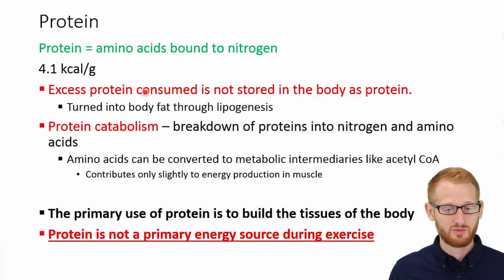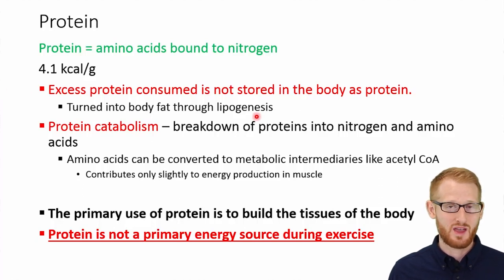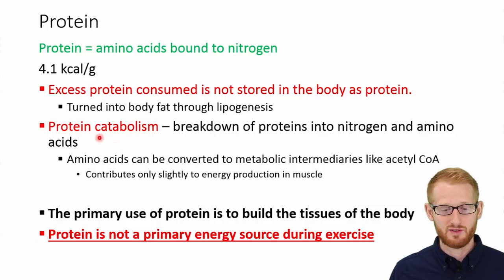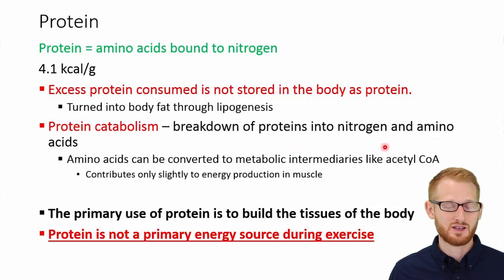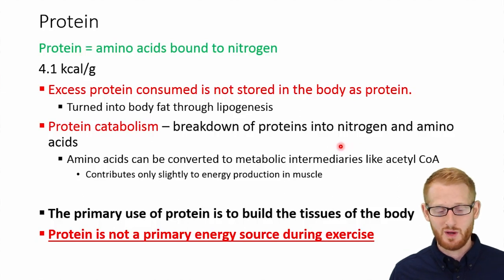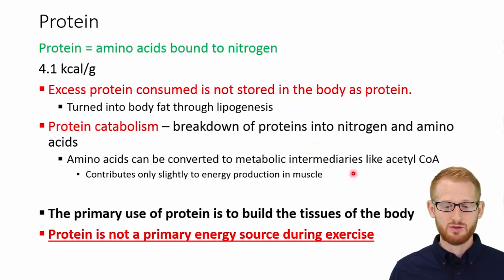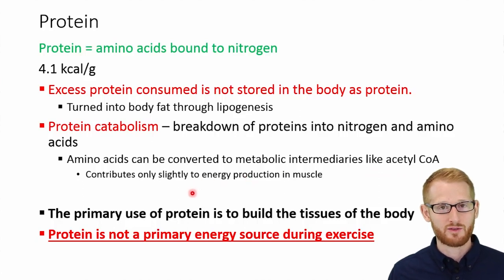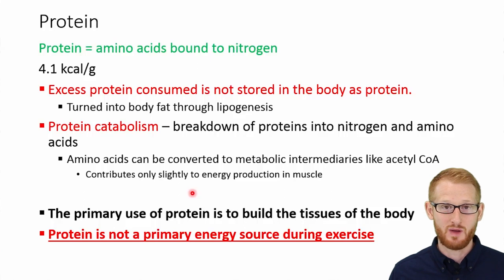If we consume too much protein, just like carbohydrates, it's going to turn into fat through lipogenesis. If we consume too much of any calorie-containing substance, we are going to produce fat. The reverse is protein catabolism — we can break down proteins, liberating the amino acids and nitrogen. With those amino acids, we can produce acetyl-CoA, which goes into the Krebs cycle to produce energy. Remember, though, the body prefers not to use protein as its energy source, and it's best that it does not.